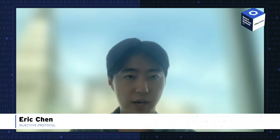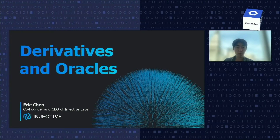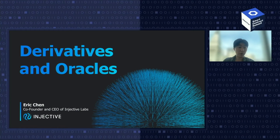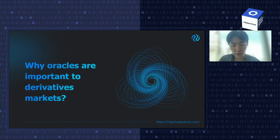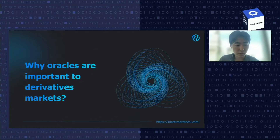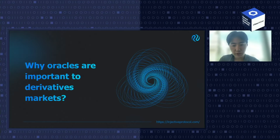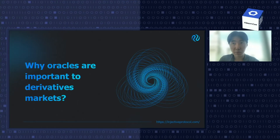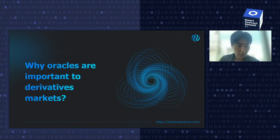Hey guys, this is Eric from Injective Protocol. Really glad to spend the time with you and talk about attack vectors for oracles and the security of oracles, especially with regards to derivatives. During the phase of Solstice testnet, we processed a lot of transactions — more than 10,000 trades per day and also around a billion dollars in notional value. So we had a lot of learnings in terms of how important oracles are to these derivative markets. The short answer is: the security of the oracle equals the security of the derivative market.